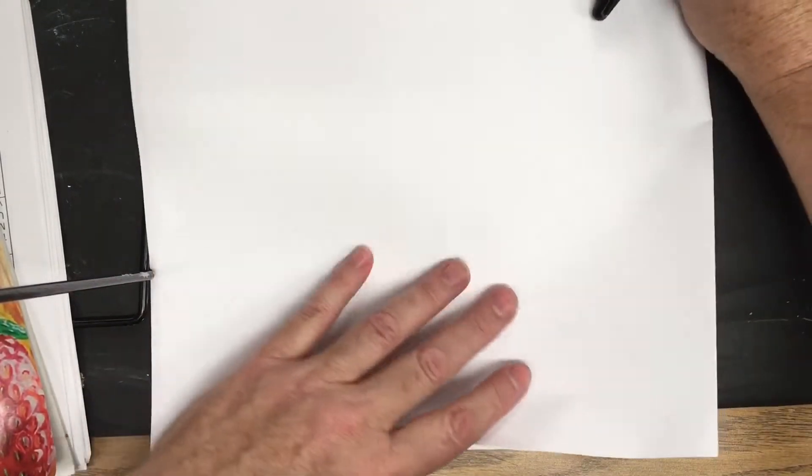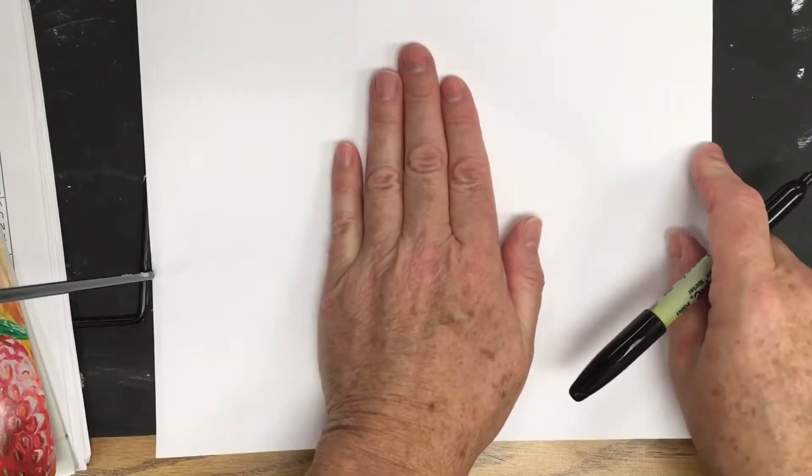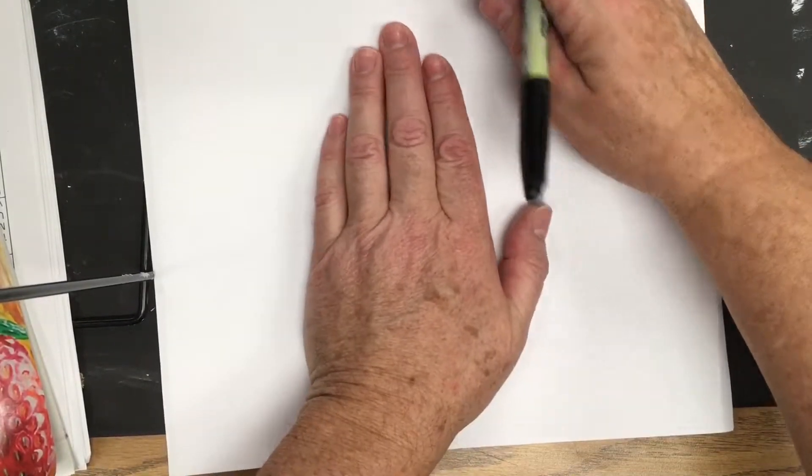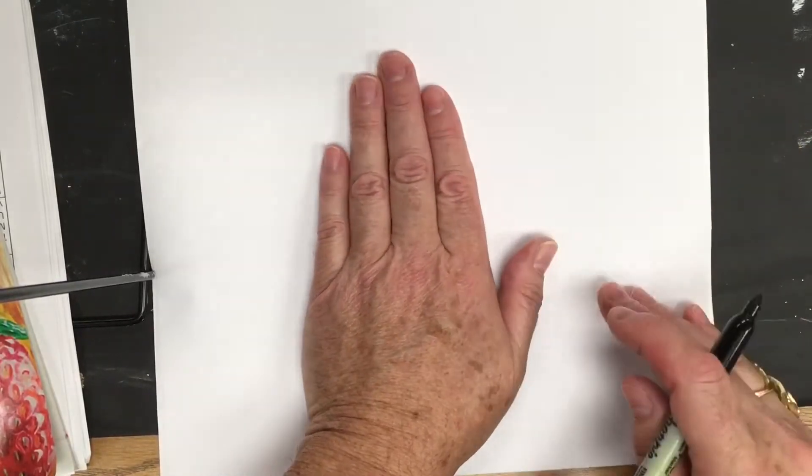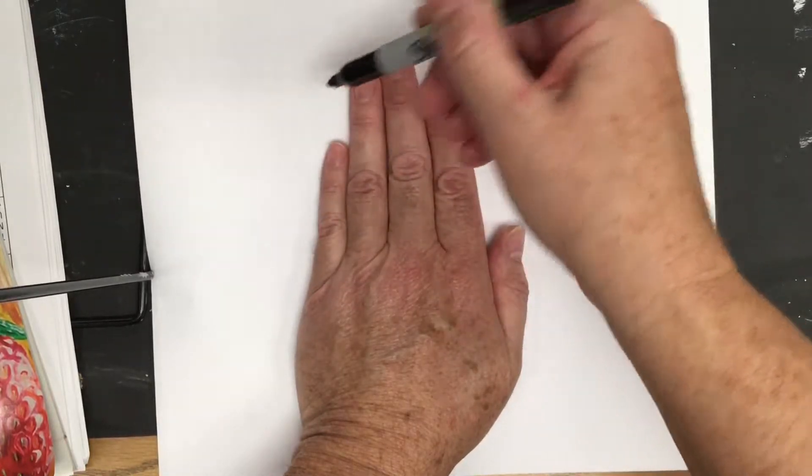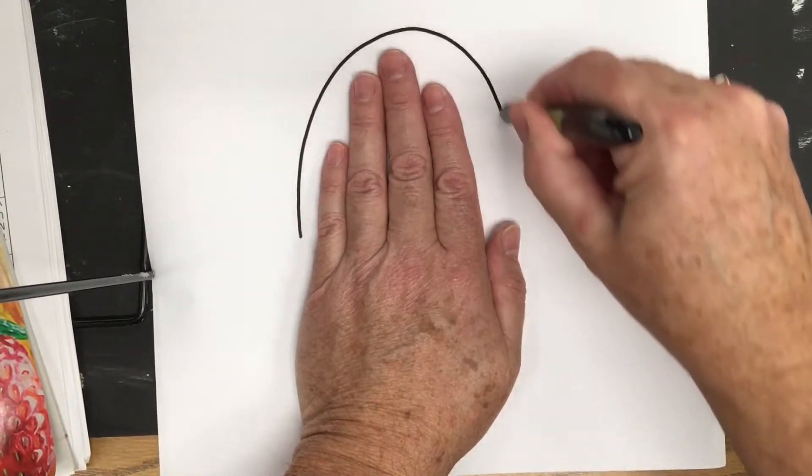So if we put our hand in the very middle, like this, we need to leave a little bit of room at the top for the feet area. I'm going to take my pencil or paintbrush or marker and I'm going to draw around my hand.